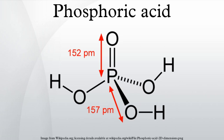Orthophosphoric acid is a non-toxic acid, which, when pure, is a solid at room temperature and pressure. The conjugate base of phosphoric acid is the dihydrogen phosphate ion, H2PO4⁻, which in turn has a conjugate base of hydrogen phosphate, HPO4²⁻, which has a conjugate base of phosphate, PO4³⁻.